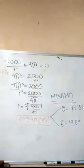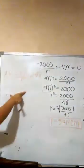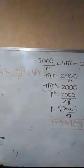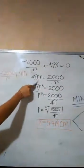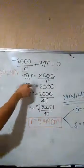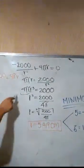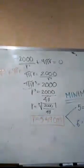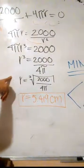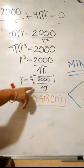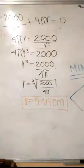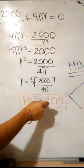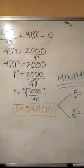Ahora nuestra derivada la igualaremos con cero para poder hallar nuestro radio. Entonces tenemos que 4πr es igual a 2000 sobre radio al cuadrado. 4πr³ es el radio que está al cubo y nos da como resultado que radio es igual a 2000 sobre 4π al cubo. Entonces nuestro resultado es radio es igual a 5.419 centímetros.